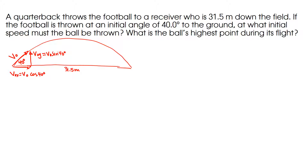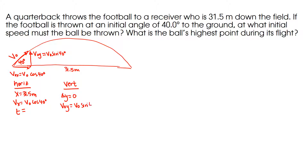I'll list my variables. In the horizontal direction: x is 31.5 meters, Vx is V0 cosine of 40 degrees — I'm looking for V0 — and T is unknown. In the vertical, I'm thinking about the entire trip. I'm landing at the same altitude at which I left, so delta-y is zero. V0y is V0 sine of 40 degrees. My final y-velocity is minus V0 sine of 40, because when delta-y is zero my trip is symmetric. Acceleration is minus 10 meters per second squared, and T is something I'm looking for.